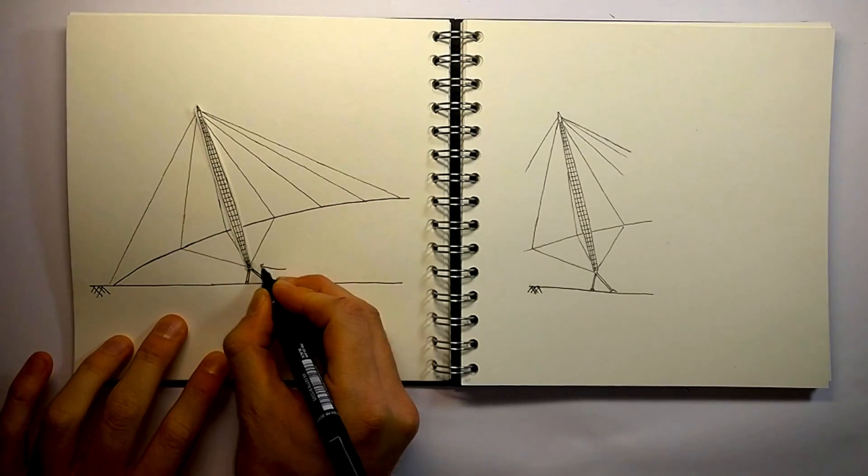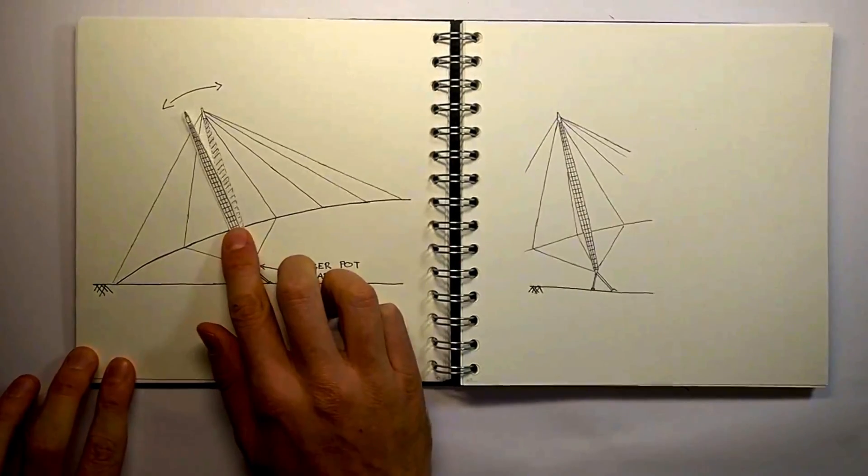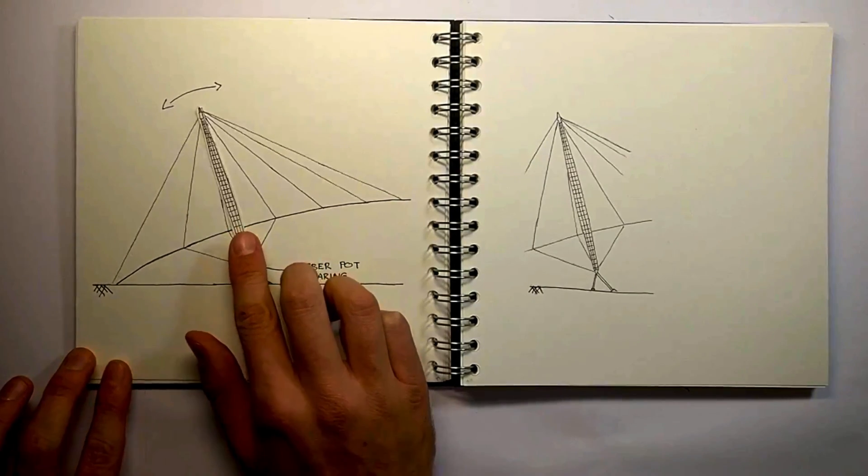The bottom of the mast was also pinned, which allowed for small rotations. This ensured there was no accumulation of moments whilst the roof deflected under varying loads.